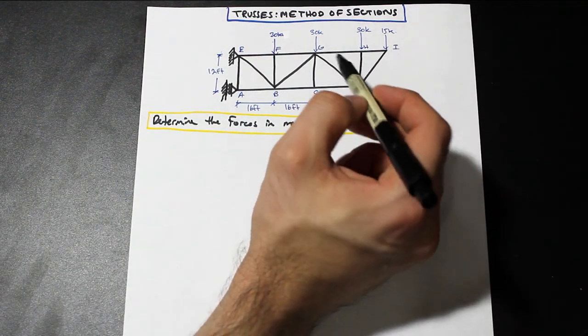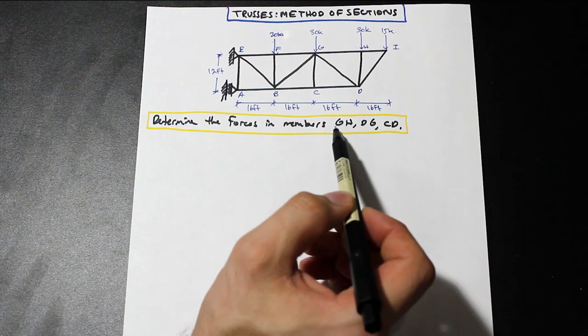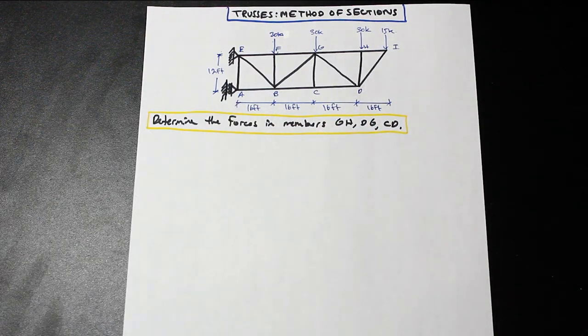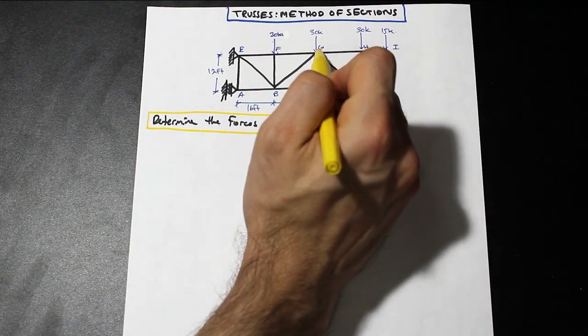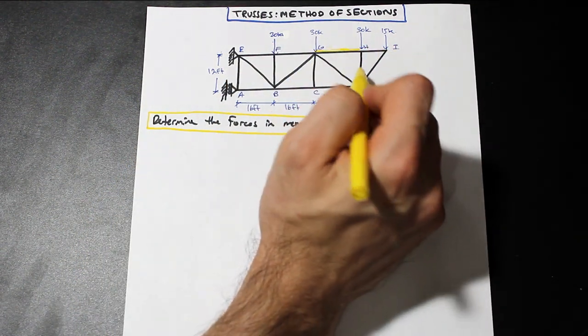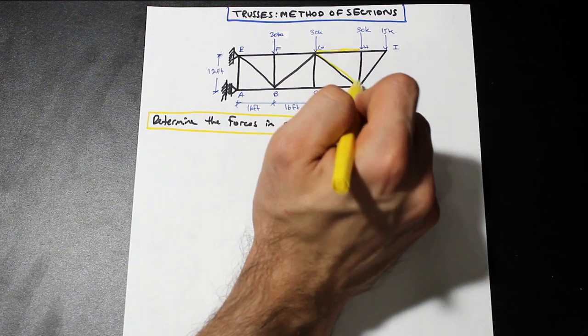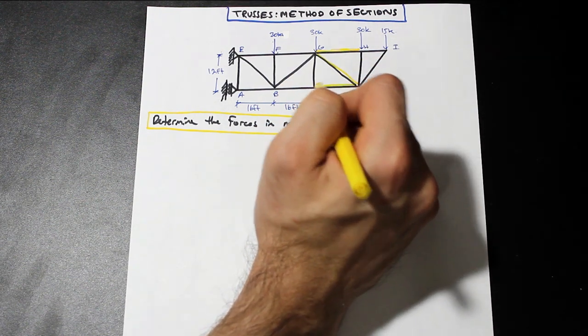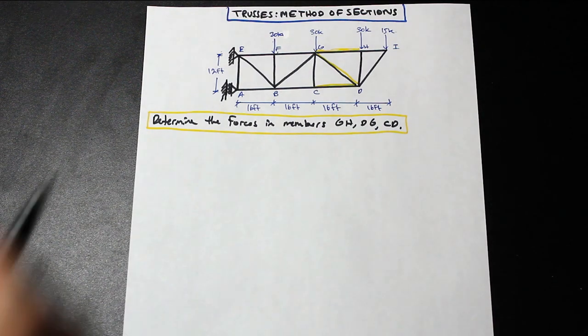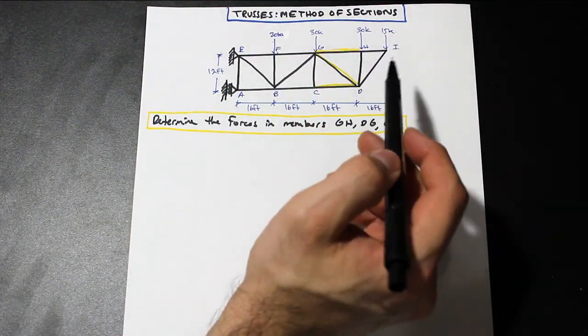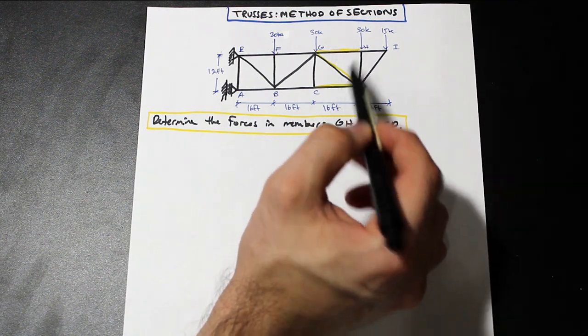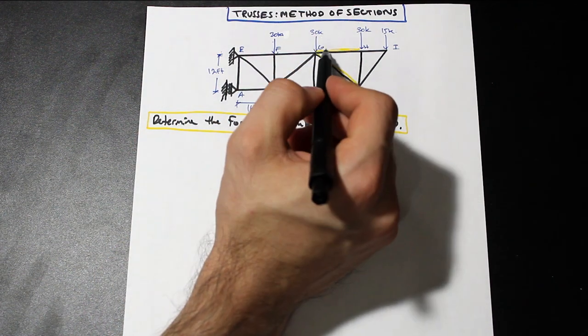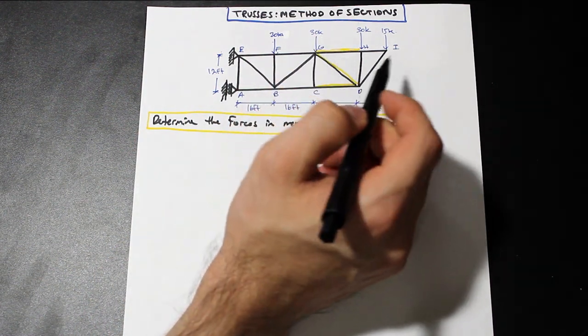So first of all, the trick here in the method of sections is to choose where to cut. So we're asked to find members GH, DG, and CD. So I'm just going to go ahead and highlight those for you. I recommend you do this during the exam. Get a colored marker or something and just highlight the members that you want to cut. It gives you a little visual representation of what exactly it is that you're doing. So now the idea is that we want to make one cut that goes through all three of these so that we can expose them all, and then we can find a common point in which to analyze them.